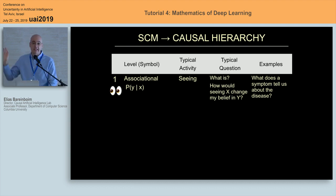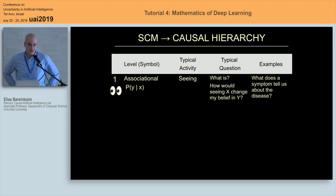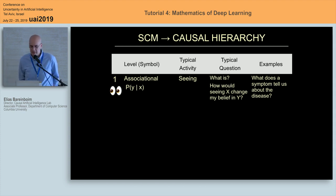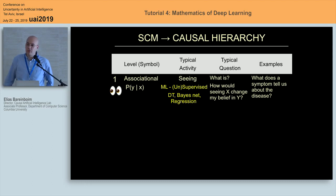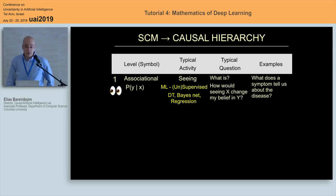The first type of distribution is the passive or associational distribution, related to the activity of the SCM. Symbolically, you write it as P(Y | X). The kind of question you want to answer is: how would seeing X change my belief about Y? All of machine learning — supervised and unsupervised learning — decision trees, Bayesian nets, regression, neural nets — are living in this layer, operating on this type of distribution.